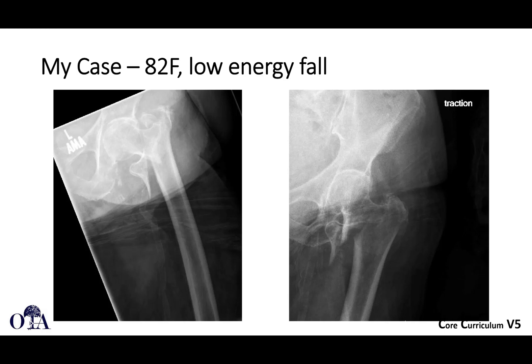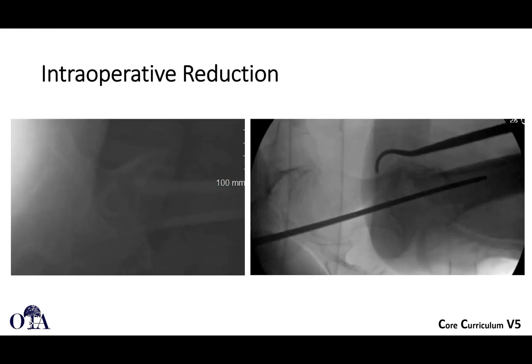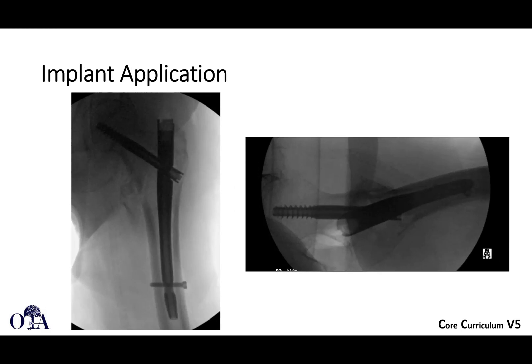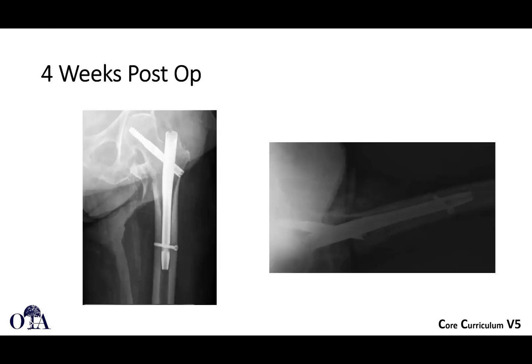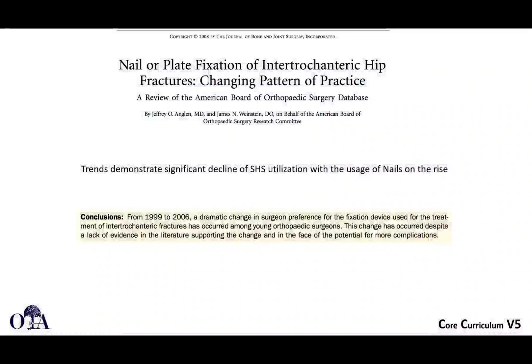Here's an example: an 82-year-old female with a low-energy fall. There's a traction view on the right showing the intertrochanteric femur fracture — it looks like four parts. You can see the intraoperative reduction with the guide pin placed. This is a cephalomedullary nail with satisfactory reduction of the main fragments. The lesser trochanter does not need to be directly addressed. This is an early follow-up with a short cephalomedullary nail. We'll pick up here in the next video.